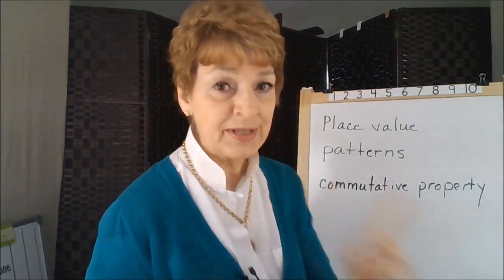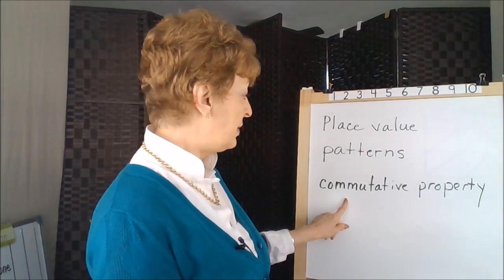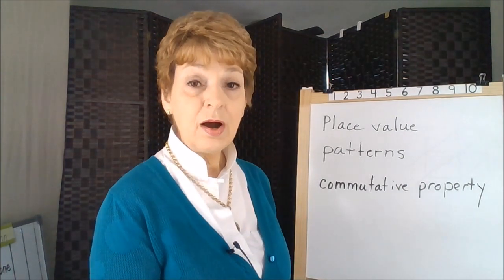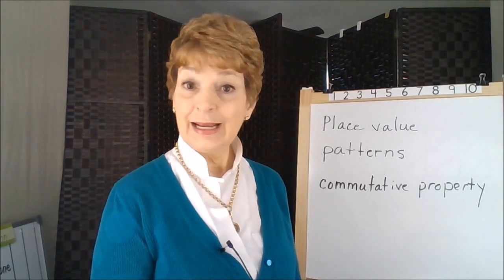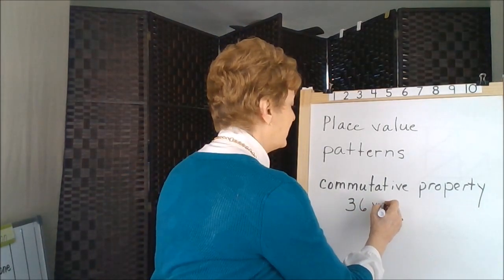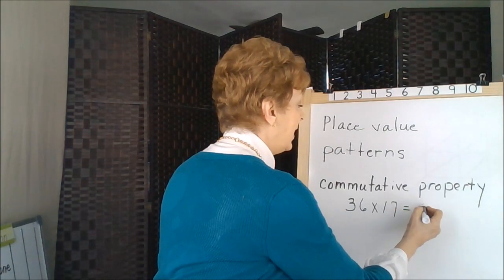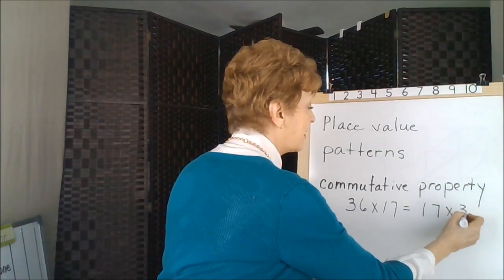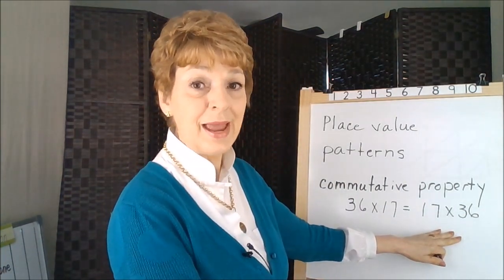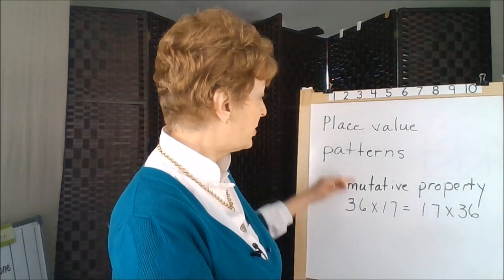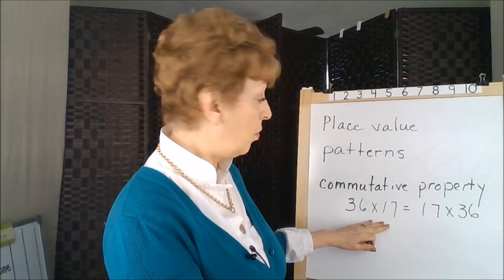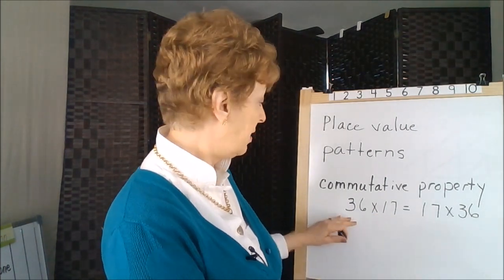Let me jump to the commutative property, which basically says that when you're adding or when you're multiplying, it doesn't matter which number comes first or second. 36 times 17 is the same as saying 17 times 36. You can flip these numbers and still get the same answer. There are certain numbers that work better when you use them last in the problem.